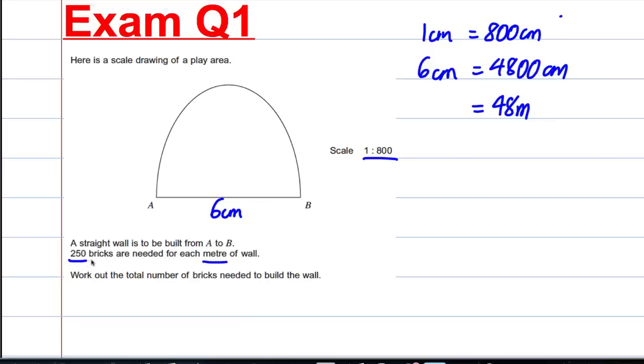Now 250 bricks are needed for each metre. Therefore, 250 multiplied by 48, which is equal to 12,000 bricks are needed. A nice, easy exam question for us to lap up the marks there.